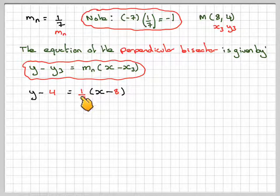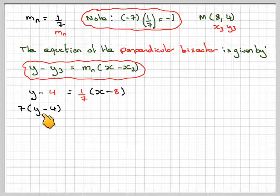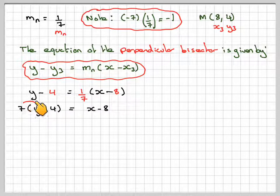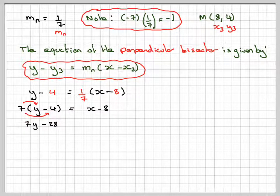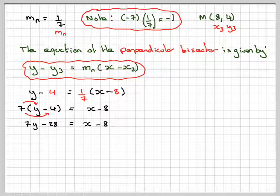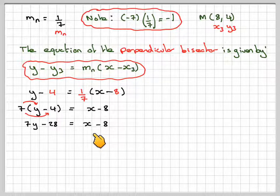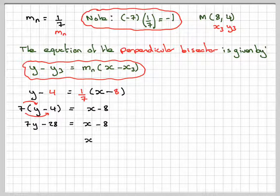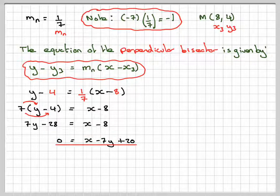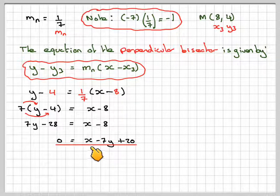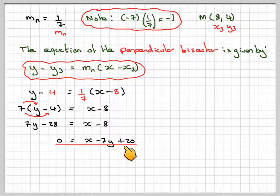Now if there's a fraction, the easiest thing to do here is to multiply the whole thing through by 7. So we get 7 brackets, Y minus 4 is equal to X minus 8. And then we do 7 times Y, which gives me 7Y. 7 times minus 4, which gives me minus 28, and that's still equal to X minus 8. If I take the 7Y over and add 28, we're going to get X minus 7Y plus 20, and that's now equal to 0. So our equation of our perpendicular bisector is X minus 7Y plus 20.